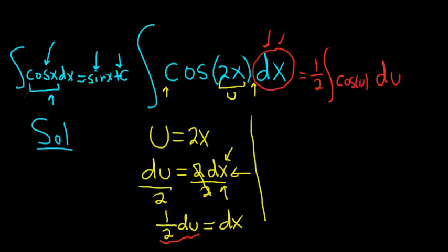And so now we can use our powers from before, right? We know when we integrate cosine, we get sine x plus C. So this is 1 half sine u plus C, except we know what u is.